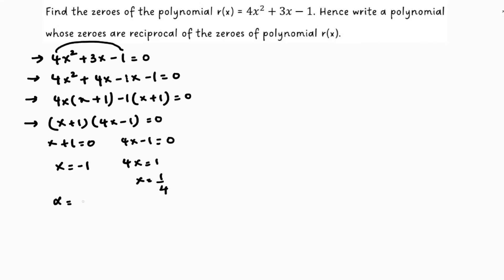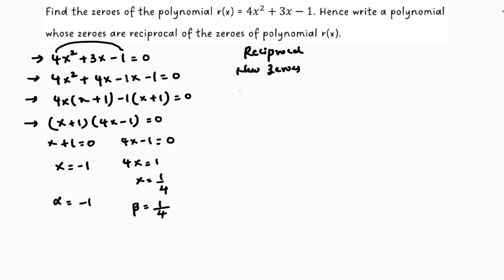So x = 1/4. Here alpha is -1 and beta is 1/4. Now we need to find the polynomial whose zeros are reciprocal. So the new zeros are: reciprocal of -1 is -1, and reciprocal of 1/4 is 4.